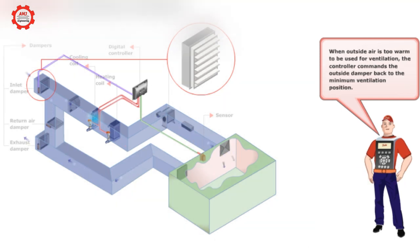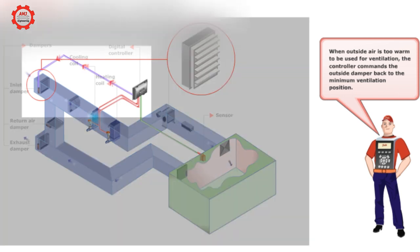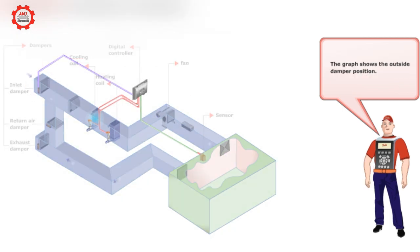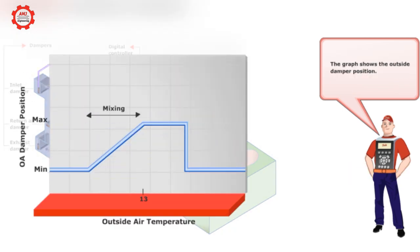When outside air is too warm to be used for ventilation, the controller commands the outside damper back to the minimum ventilation position. The graph shows the outside damper position.